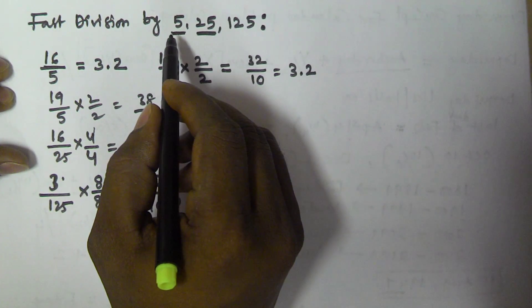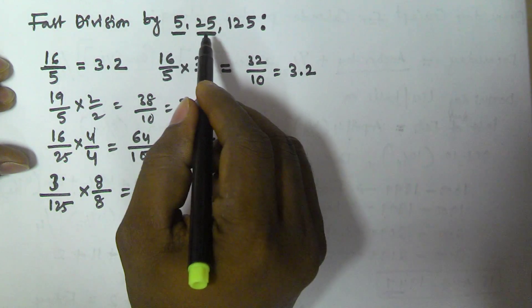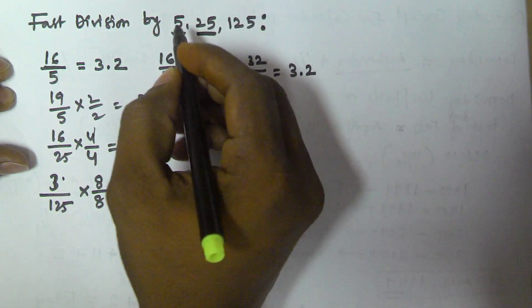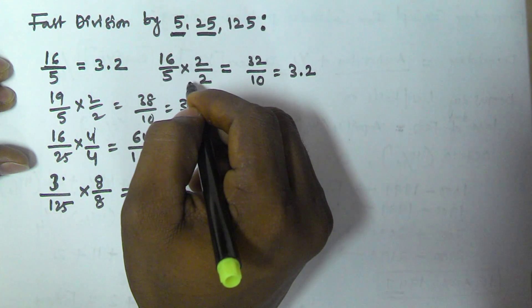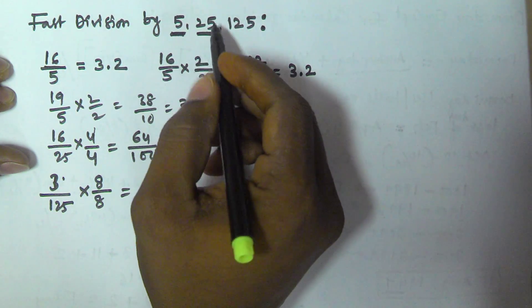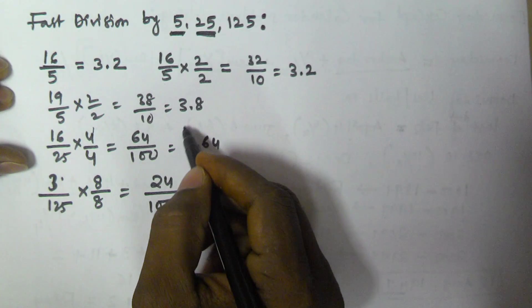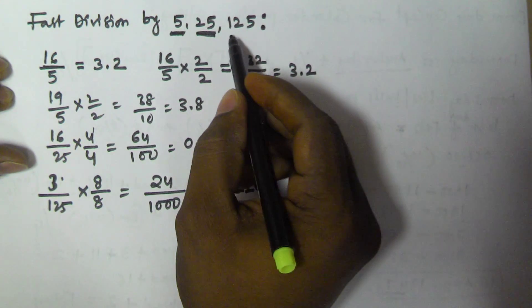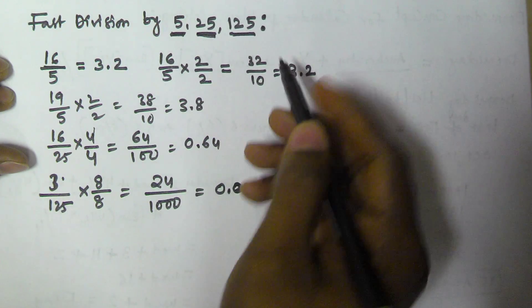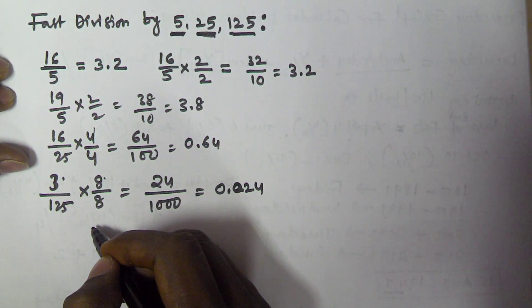So to quickly divide a number by 5, 25, and 125: in the case of 5, multiply numerator and denominator by 2. When dividing by 25, multiply by 4. When dividing by 125, multiply by 8. That will give the result within a second.